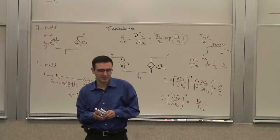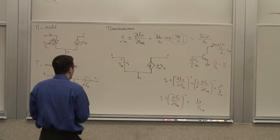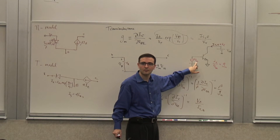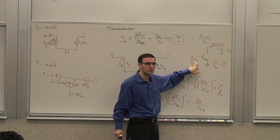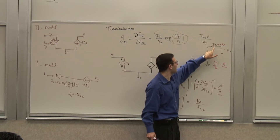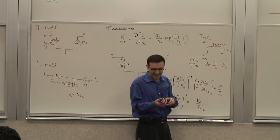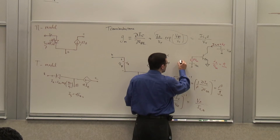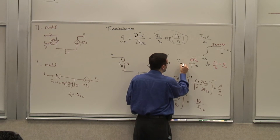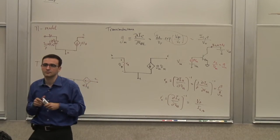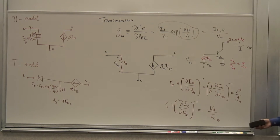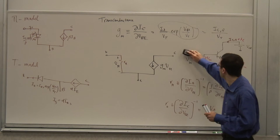Let's agree on the convention. From now on, whenever I show a lowercase quantity with lowercase indices, it refers to small signal quantities. Whenever everything is uppercase, it's just the DC part. And if I want to show the combination — both the large signal and the sum — it's a proper notation. I'll try to follow the book convention to keep things consistent.